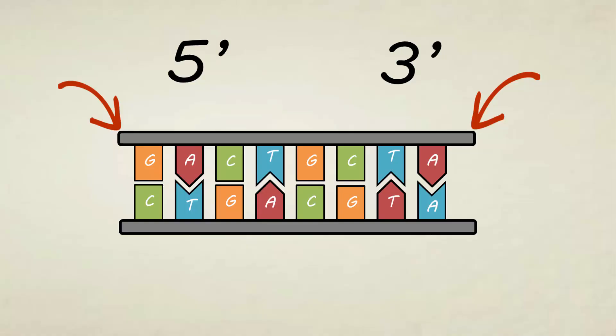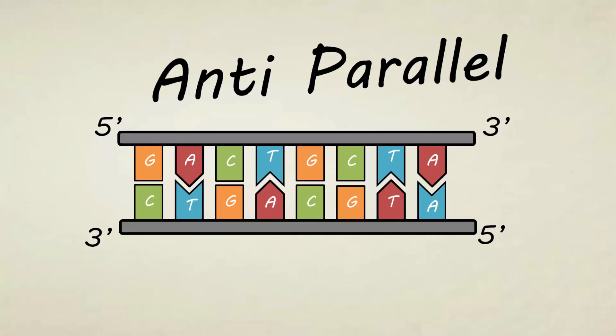The synthesis of nucleic acids can only happen in the direction of 5' to 3'. So let's say that the upper one is 5' and 3'. The bottom one will be 3' and 5'. Why? Because DNA is anti-parallel.